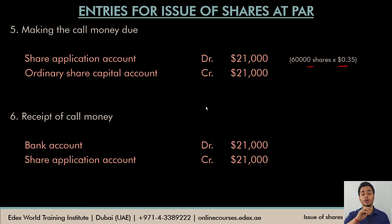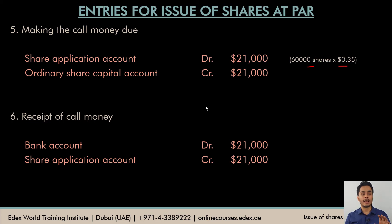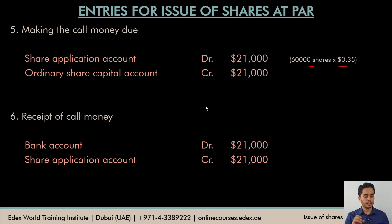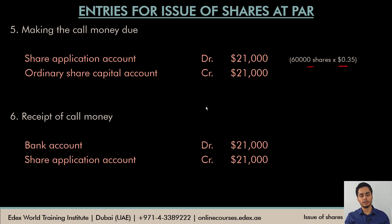I would want you to do the ledger accounts on your own. Try to transfer the journal entries to the ledger accounts and see if you can do it. The share capital account should have a balance carried down of 60,000 shares × $1 = $60,000. The share premium account should have a balance carried down of 60,000 shares × $0.25 = $15,000. If these two are matching, your ledger accounts are correct, assuming you have transferred all entries correctly.